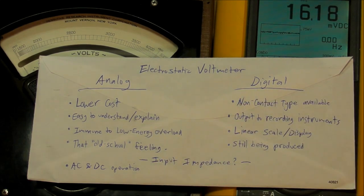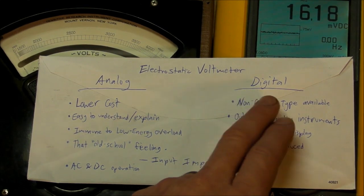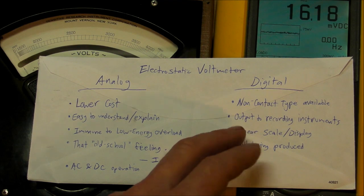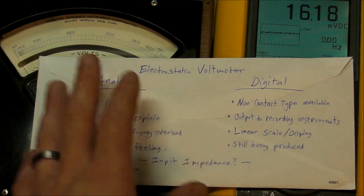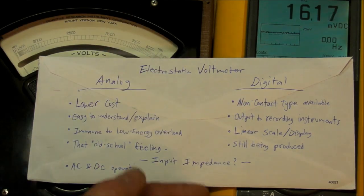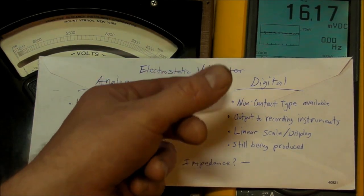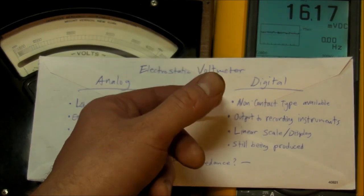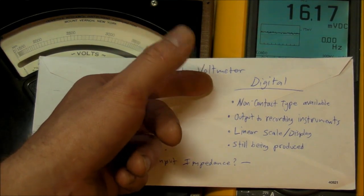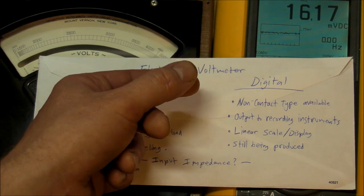But the digital are still certainly being produced, you can still get brand new digital multimeters or digital electrostatic meters, but of course for a much higher cost than the analog. Analog, easy to understand, explain, very very basic physics.